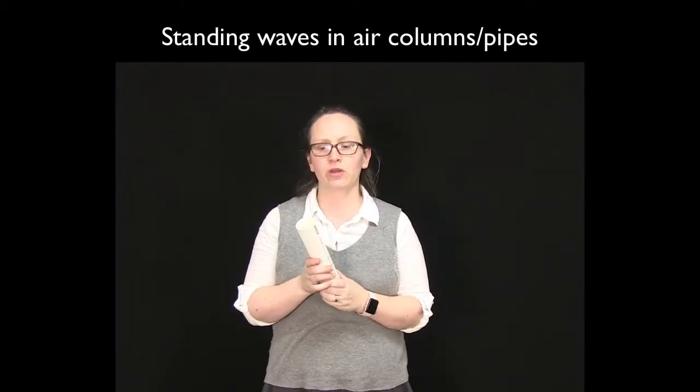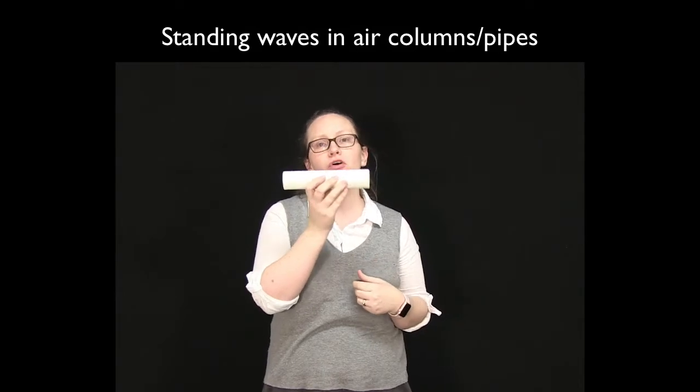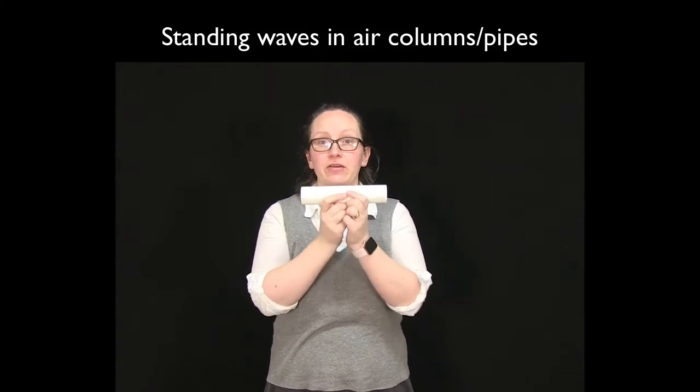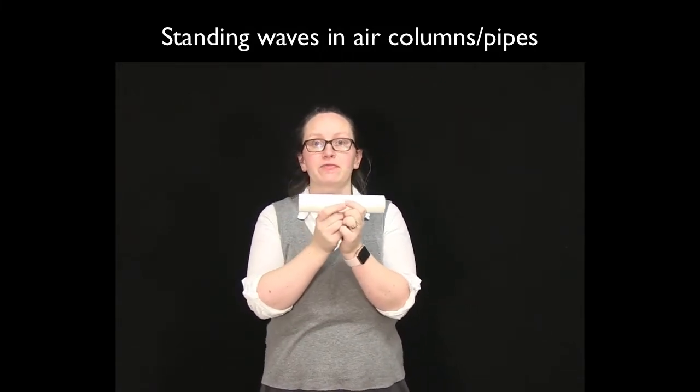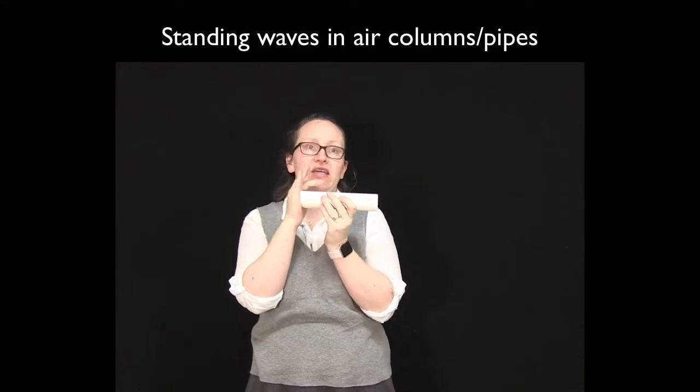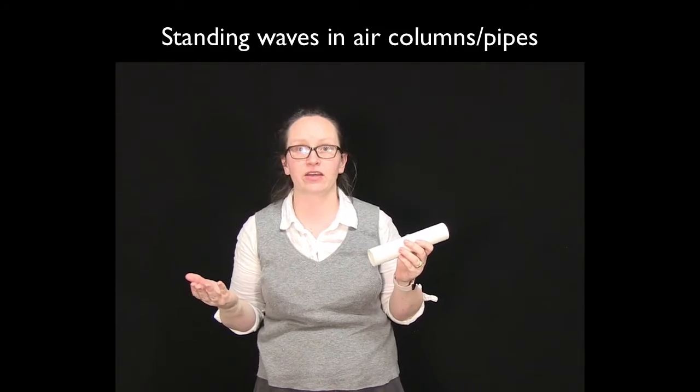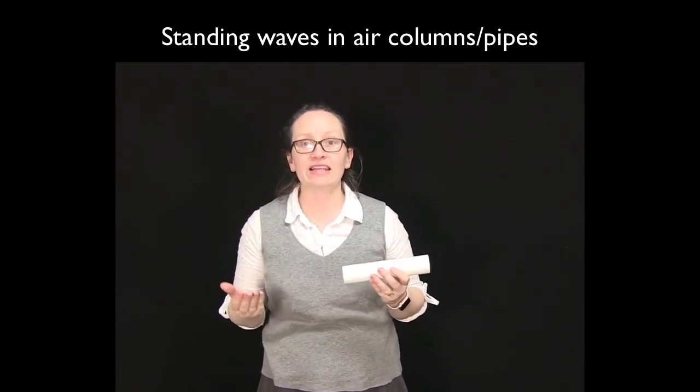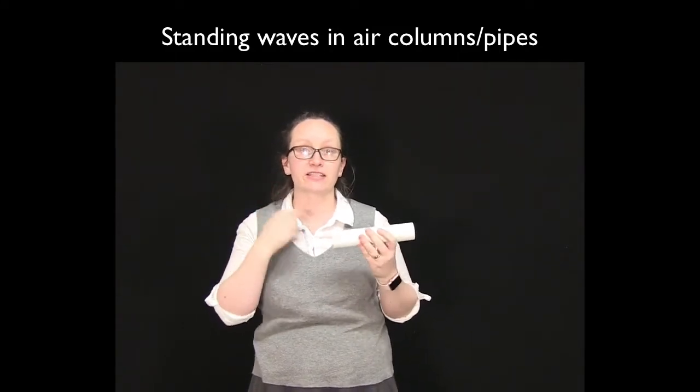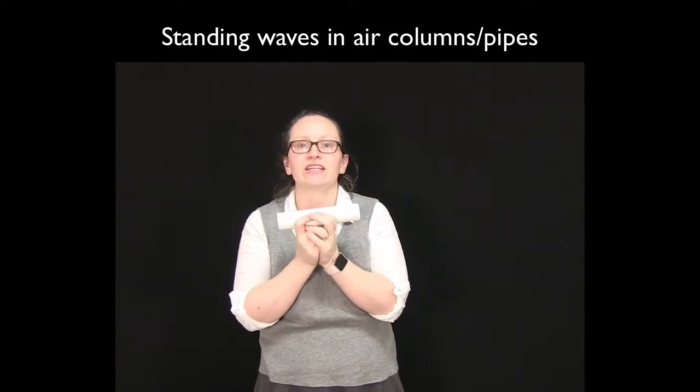In this lesson we're going to be considering standing waves in air columns or pipes. By the end of this lesson you'll be able to calculate the resonance length for different types of pipe, be they open at both ends like this one or closed at one end and open at the other, and you'll also know how to account for end effects. You'll then apply this to an investigation where you'll use these standing waves, the resonances that you hear, to measure the speed of sound in air.